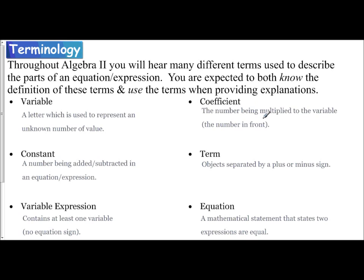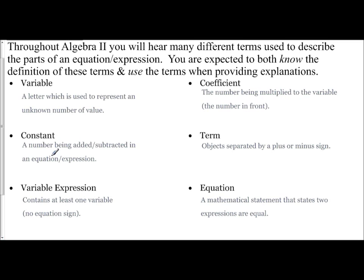A coefficient is the number that's being multiplied to the variable, so it's the number in front of the variable. Another phrase you're going to hear is constant. A constant is a number being added or subtracted in an equation or expression. It is the number itself, not any variable - it's the plus or minus a number.